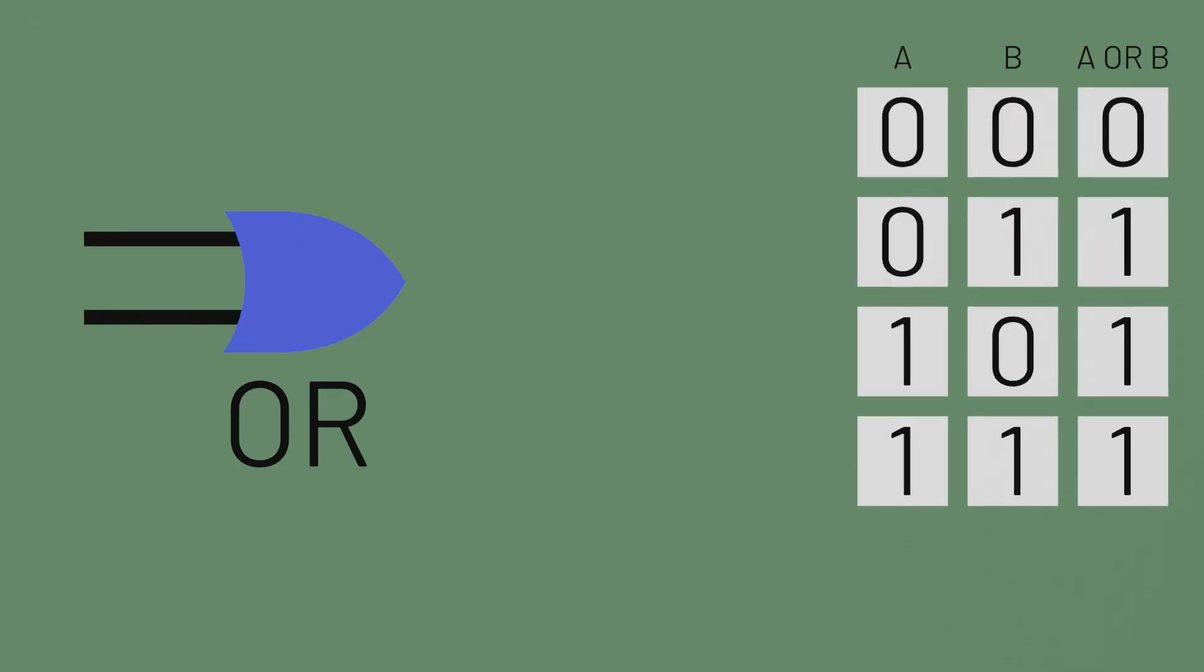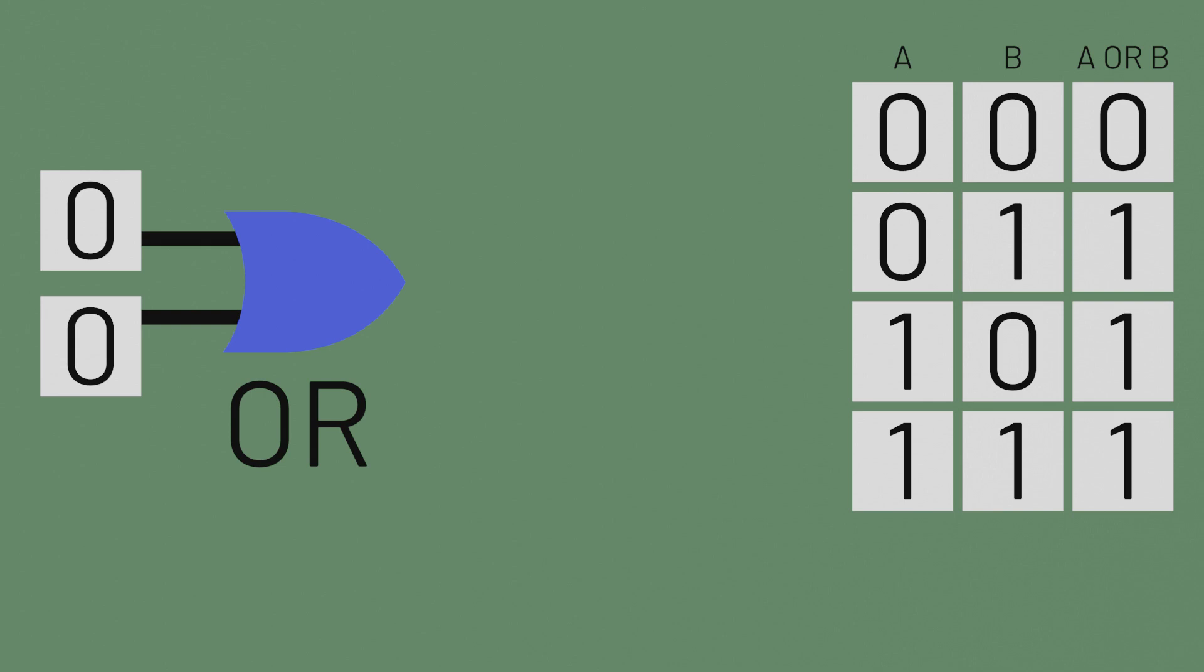One of the simplest logic gates is the OR gate. It has two binary inputs, and if both inputs are 0, then the output is 0. But if the first or second input is a 1, or both are 1's, then the output is a 1.